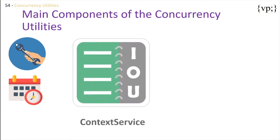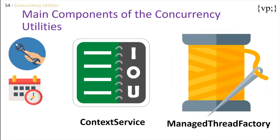There's also the context service. Think of this as an IOU — you can activate it at any time, as you wish, later on in the program. And managed thread factories are used by applications to create managed threads and are managed by the container. This is really useful when you want to create custom threads.